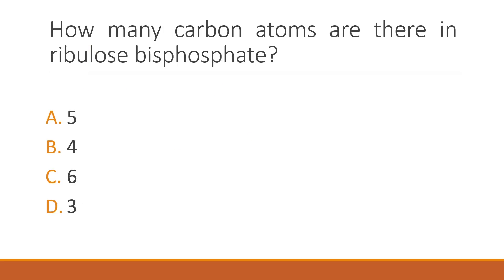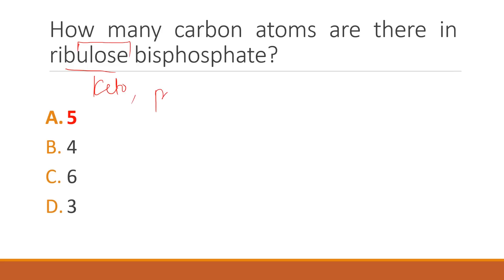How many carbon atoms are there in ribulose bisphosphate? The correct answer is option A: five. Ribulose is basically a keto sugar and is also a precursor molecule in the Calvin cycle.